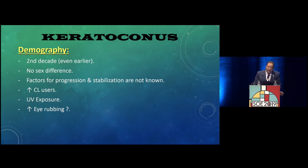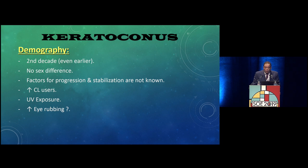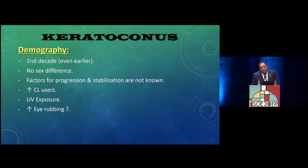Factors affecting progression and stabilization are not fully known. It increases with contact lens use and ultraviolet ray exposure — that's why it's very common in the Middle East where I work. It increases with eye rubbing, and there is an upcoming theory that decreasing eye rubbing might decrease the progression of keratoconus.